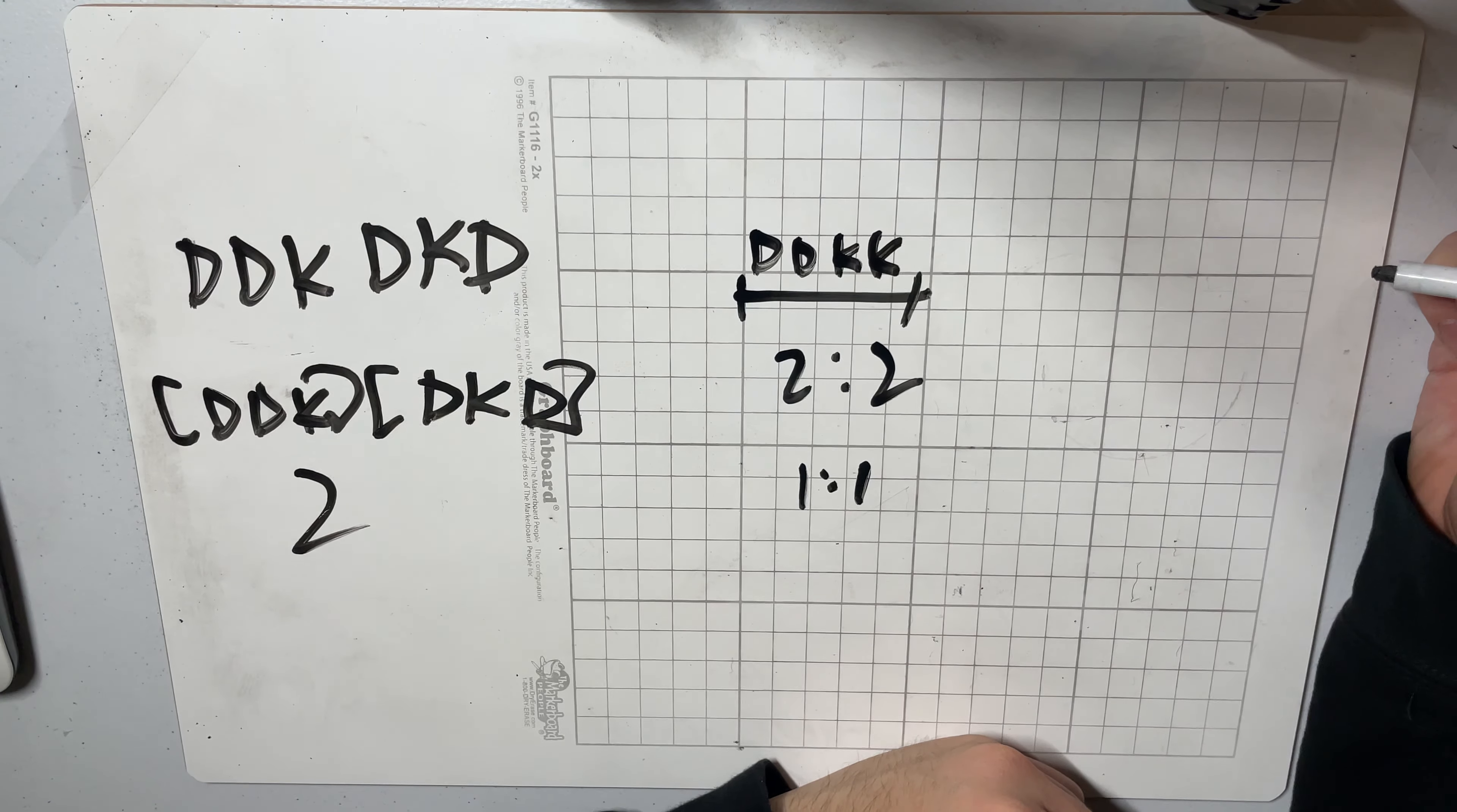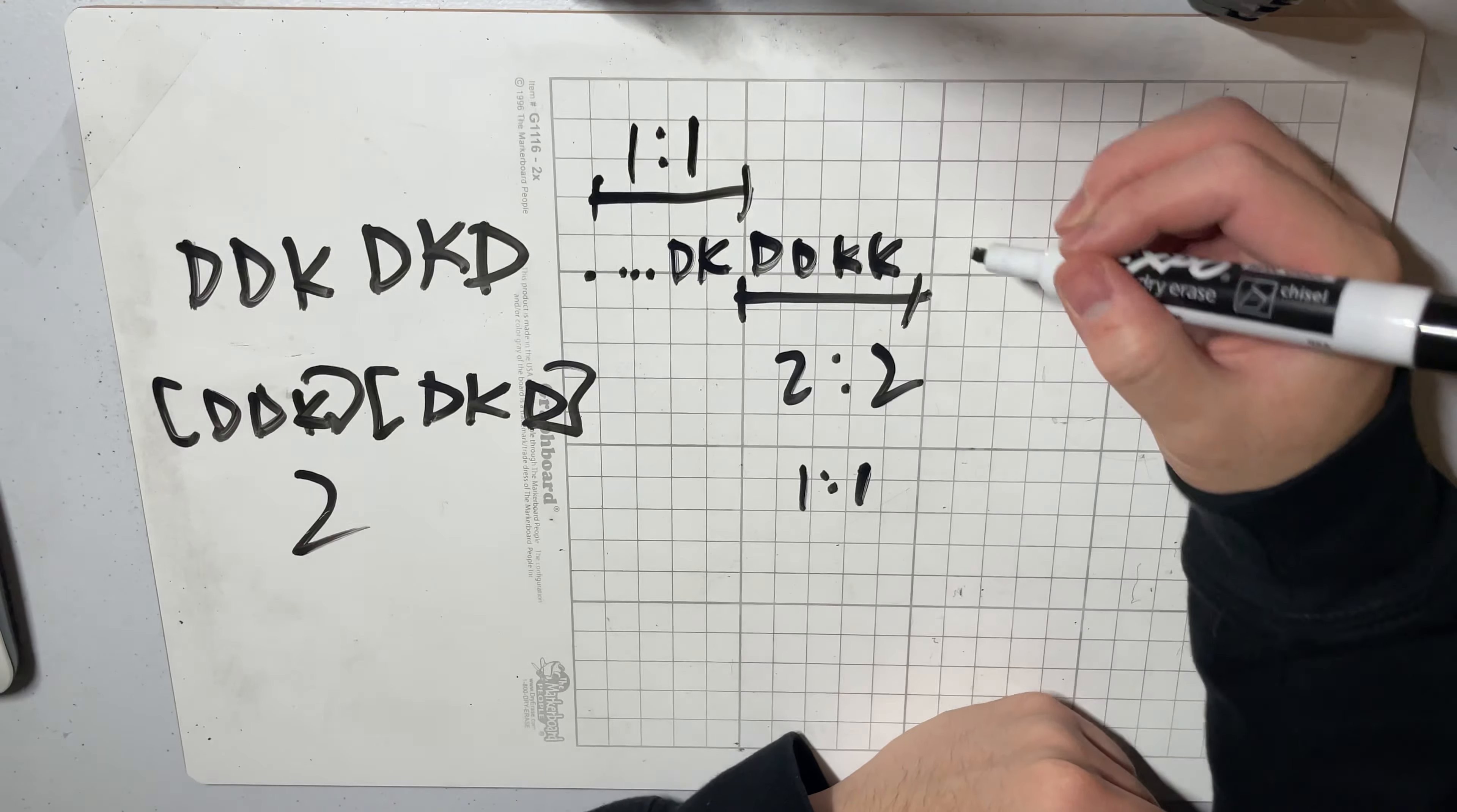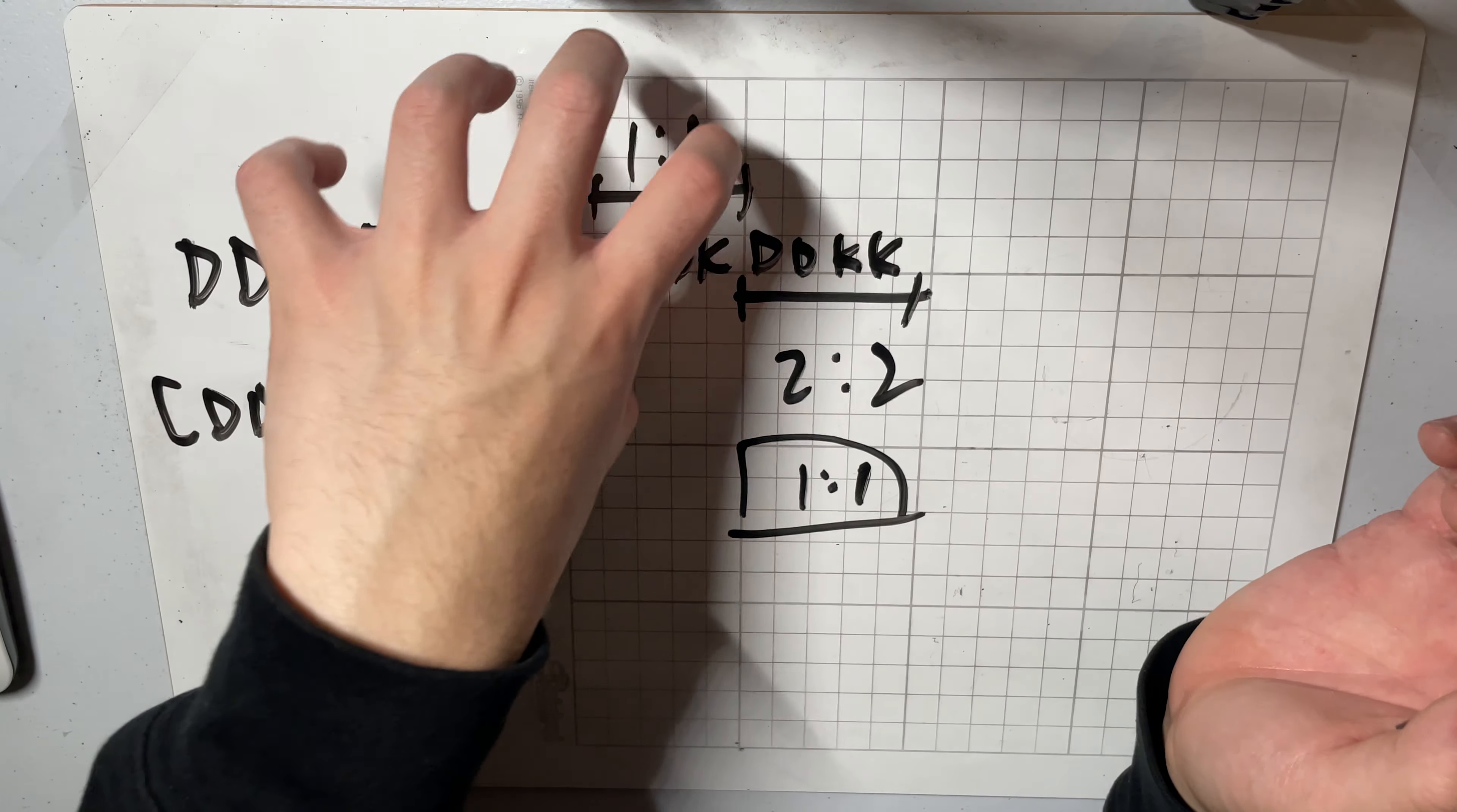And the reason why is that if we had any previous prefixes that had the same ratio of one to one, then this two to two we can treat it as essentially a block of one to one. And we can just append it to any existing prefix of the same ratio.